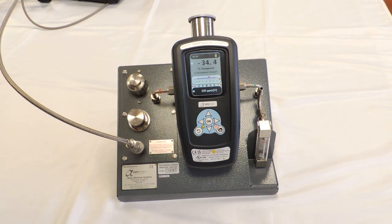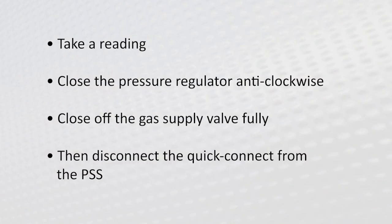You'll see that the dew point has reached equilibrium. At this point you can take a reading and you can close off the pressure regulator by closing it anti-clockwise, then close off the gas supply valve fully and then you can disconnect the quick connect from the PSS.